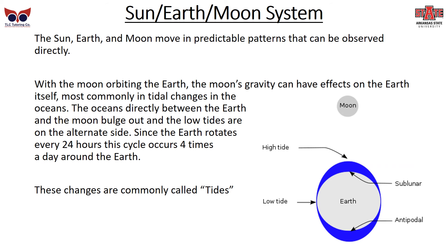In the Sun, Earth, and Moon system, because we move in a predictable way relative to the Sun and Moon, we can see certain effects on the Earth. When the Moon is orbiting the Earth, the Moon's gravity has effects on the Earth — most commonly in tidal changes. When the oceans are directly between the Moon and the Earth, the water is being pulled between the Earth and the Moon, leading to a high tide where the water rushes to that place. Consequently, you end up with a low tide on the sides not facing the Moon. Since the Earth rotates every 24 hours, this cycle changes four times each day. So you have a high tide, then no tide, then low tide, then no tide — back and forth. These changes are called tides, or the tidal pattern.